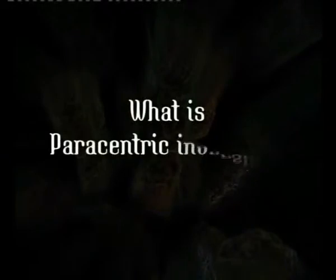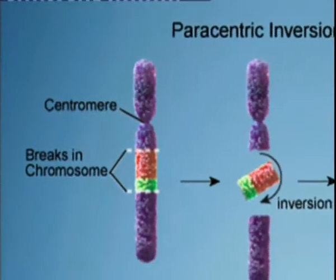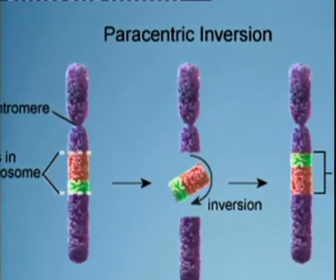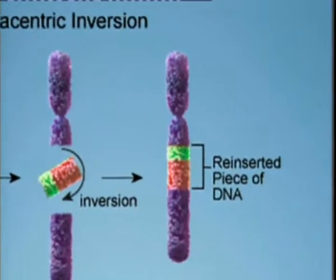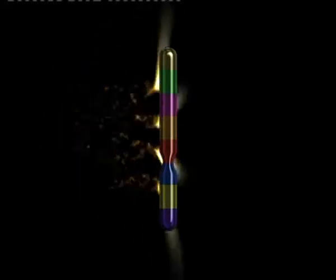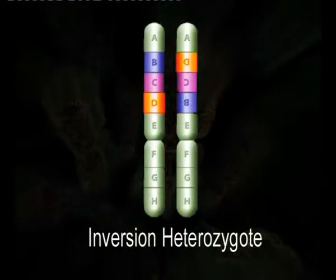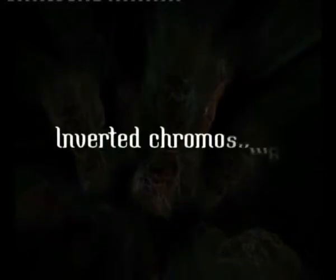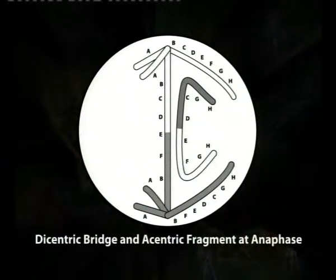Paracentric inversion means when the breakage of the DNA segment takes place in only one arm of the chromosome — in other words, the centromere is not involved. When breakage takes place in one arm, whether it is the long arm or the short arm, only that arm is involved in the inversion. When a paracentric inversion heterozygote undergoes meiosis and the inverted chromosome takes part in a crossing-over event with the normal chromosome, there is formation of a dicentric bridge and an acentric fragment.